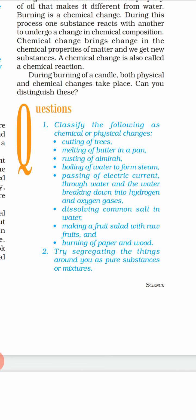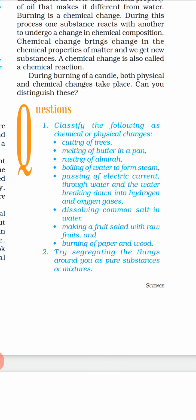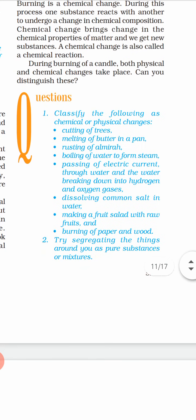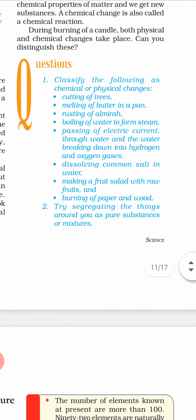Passing of electric current through water and the water breaking down into hydrogen and oxygen — here water is decomposed, broken down into hydrogen and oxygen, so it is a chemical change. Dissolving common salt in water — if you dissolve common salt in water, the property of salt is not going to change; if you evaporate, the water goes away and the salt still remains, so that is a physical change. Making a fruit salad with raw fruit — that is a physical change. Burning of pepper and oil — that is a chemical change, because in most cases burning forms smoke, and if burning forms smoke that is a chemical change.